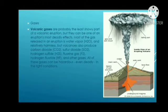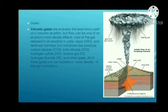Volcanic gases are probably the least showy part of a volcanic eruption, but they can be one of an eruption's most deadly effects. Most of the gas released is water vapor and relatively harmless, but volcanoes also produce carbon dioxide, sulfur dioxide, hydrogen sulfide, fluorine gas, hydrogen fluoride, and other gases. All these gases can be hazardous, even deadly, under the right conditions.